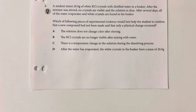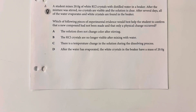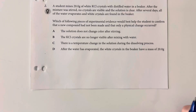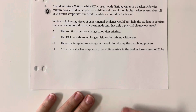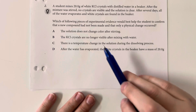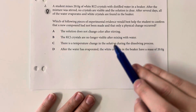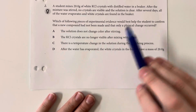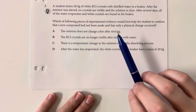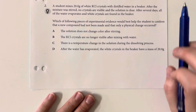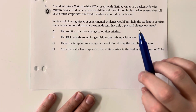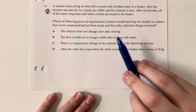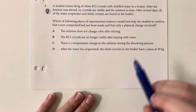With a chemical change, we look for a change in color, state, or temperature. Here we have white crystals dissolving into a clear solution, with no evidence of a reaction stated, and then white crystals produced at the end. So we need something to verify that the white crystals at the end are the same white crystals we started with.